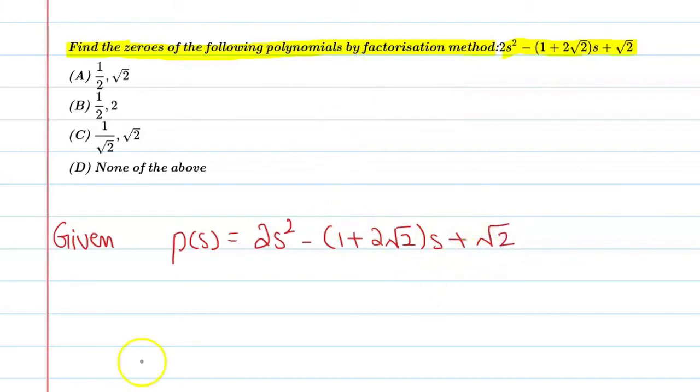Now, if you look at this question carefully, there are roots and numbers in brackets. So first multiply s inside and open the bracket. So you can say p(s) = 2s² - s - 2√2s + √2. Here minus was there and s was here, which we multiplied inside.